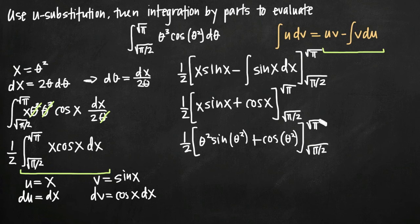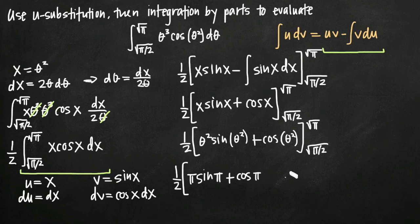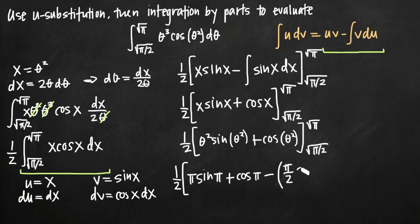Now we evaluate at the limits of integration by plugging in theta. Always plug in the top limit first, then subtract the result of the bottom limit. Plugging in square root of pi: square root of pi squared is just pi, so we get pi times sine of pi plus cosine of pi. Then subtracting the result for the lower limit, square root of pi over 2: that squared gives pi over 2, so we get pi over 2 times sine of pi over 2 plus cosine of pi over 2.